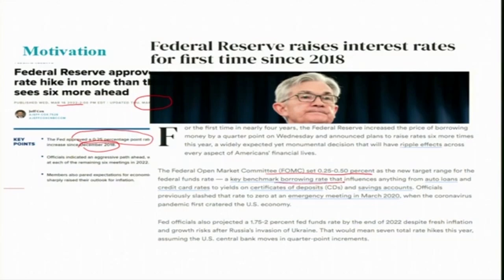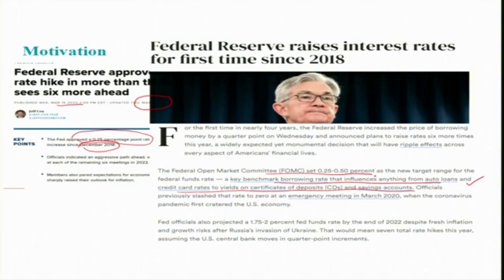The FOMC set 0.25% to 0.50% as the new target range for the Fed fund rate — the key benchmark borrowing rate that influences everything from auto loans to credit card rates to yields on certificates of deposit and savings accounts. The Fed fund rate has influence on other rates; as we discussed in a previous session on theories of interest rates, looking at term structure and risk structure, interest rates move together with high correlation. The Fed fund rate therefore has influence on all other rates of interest.